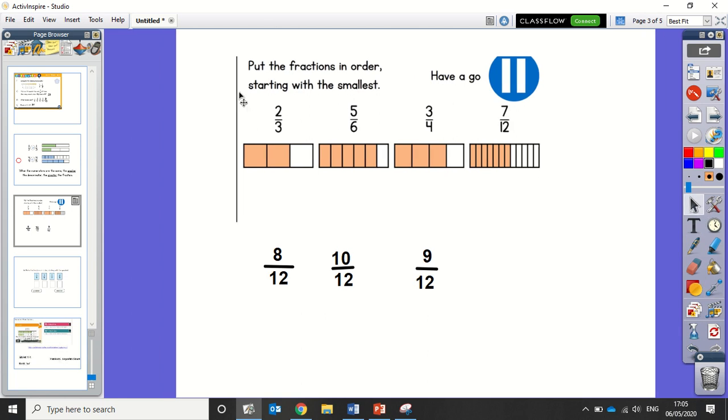So we've changed each of the denominators into 12, because that's their common multiple. And then whatever we did to the denominator, we did to the numerator.